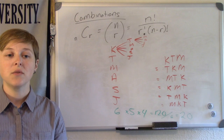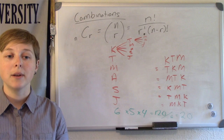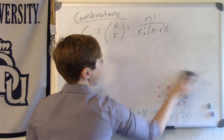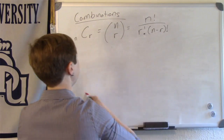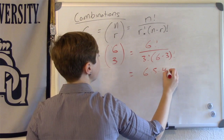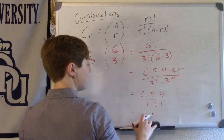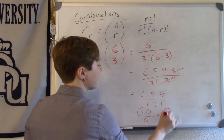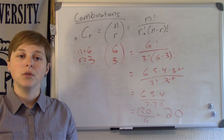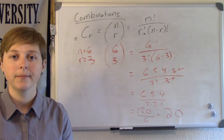If we were to use the combinations formula, where n equals 6 distinct objects and r equals 3 at a time, we would get the following. There are 20 different ways that I could choose 3 friends out of 6 to be part of my favorites in my phone.